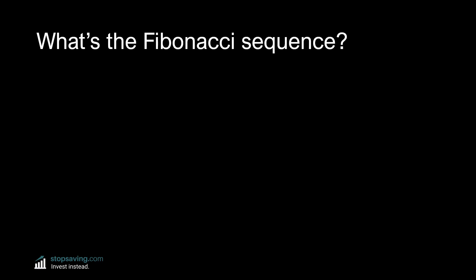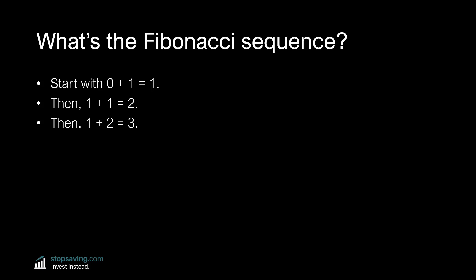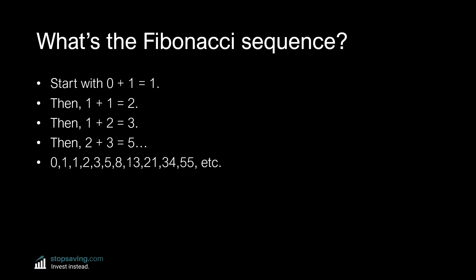So with that ancient history lesson out of the way, you're probably wondering what all the fuss is about these Fibonacci numbers. Here's how the sequence works. If you start with the number 0 and add a 1 to it, you get 1. Then if you add 1 to that 1, you get 2. Now if you add your first answer, 1, to your second answer, 2, you get 3. You then take that 3 and add the answer before it, which is 2, to get 5. This goes on and on until you get the sequence, which looks like this.